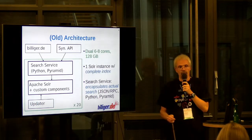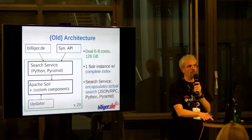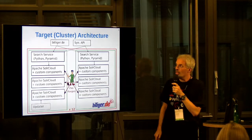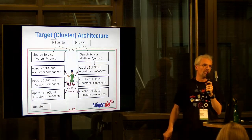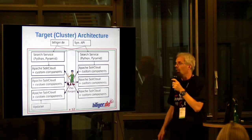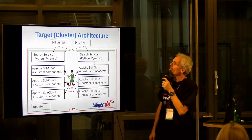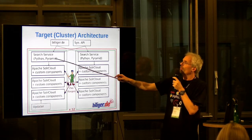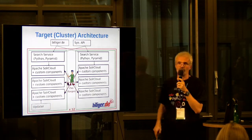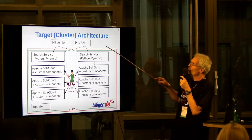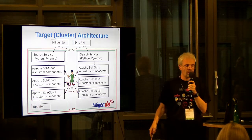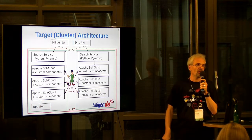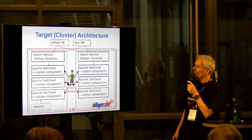So what we did is what everybody does these days — we went cluster. And going cluster, quite frankly, sucks, because it makes everything much more complicated, as you can easily see from this target architecture. We still have the search service on the green boxes, but now there are two servers forming one cluster. On each server, there are now three Apache SolrCloud instances, for a total of six instances.